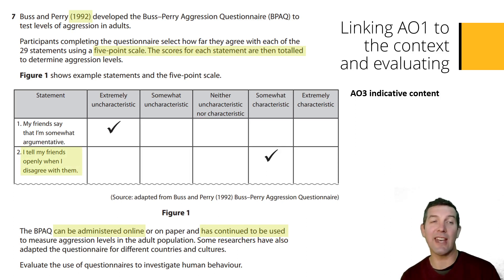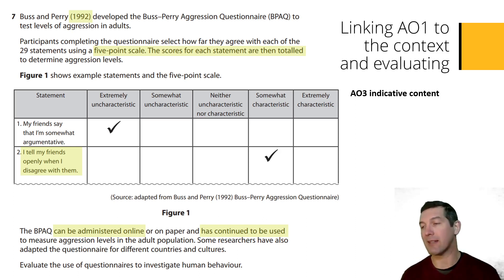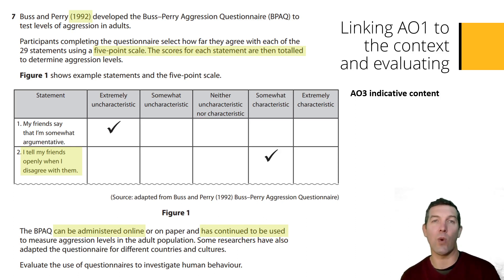We could also use the statement 'I tell my friends openly when I disagree with them' as an example of a comment that could be interpreted in different ways — it's subjective and not as scientific and repeatable as an objective measure. It could be a sign of aggression, or it might not be, so that's a weakness we could refer to.